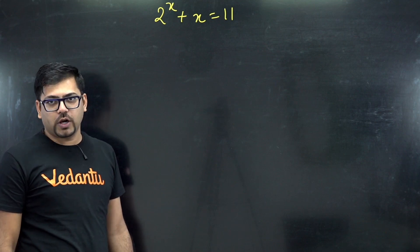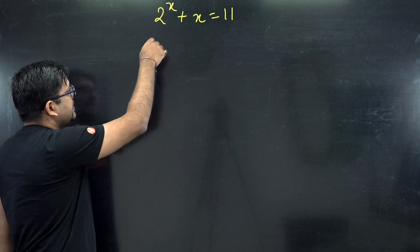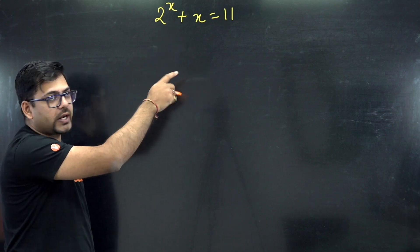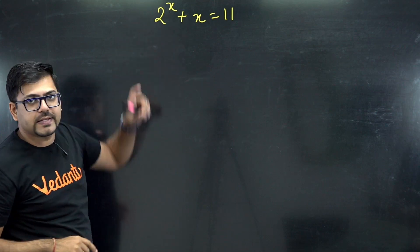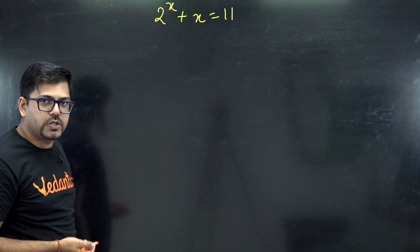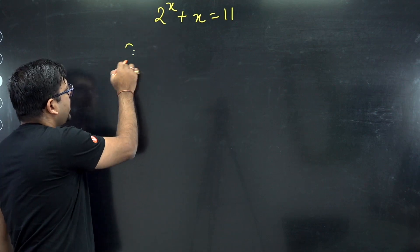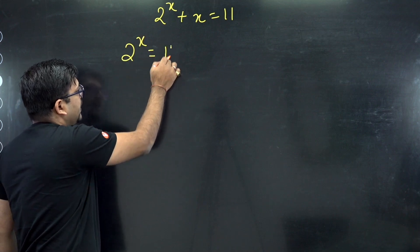So let's see how we are going to solve this. First of all, we can simply send this x to that side so that all the algebraic part becomes one side and this 2 raised to power x is an exponential part. So I can write 2 raised to power x equals 11 minus x.